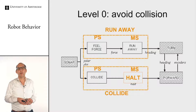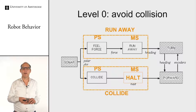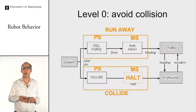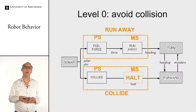In Brooks' example, you have one sensor — the sonar — that is read out twice by two different pipelines: the 'run away' pipeline and the 'collide' pipeline. Both control different parts of the robot — one the heading and the other the speed. The 'collide' pipeline detects if there is an obstacle directly in front of the robot that is close enough to risk collision, then sends a halt command so the robot stops.